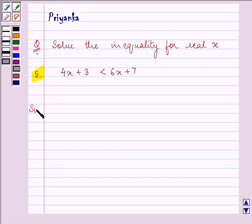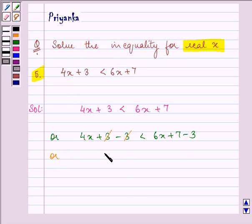Let us start with our solution. Now, in order to solve this inequality for real x, we need to simplify this, which we can do by first subtracting 3 from both the sides. These two will get cancelled. We are left with 4x is less than 6x plus 4.